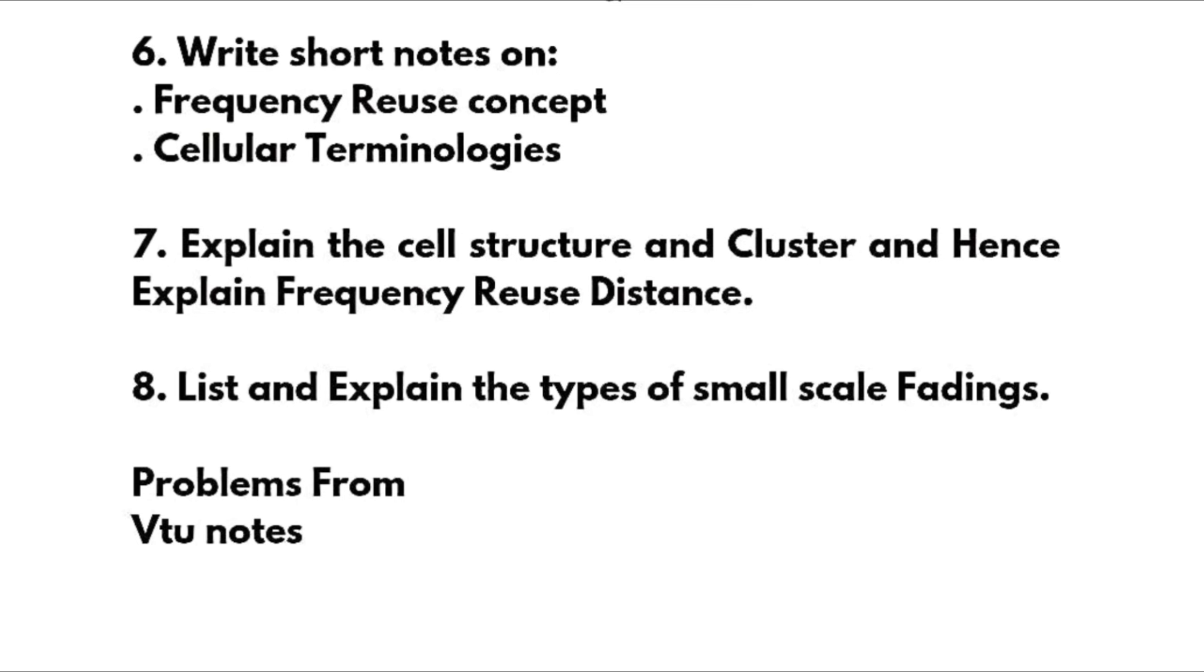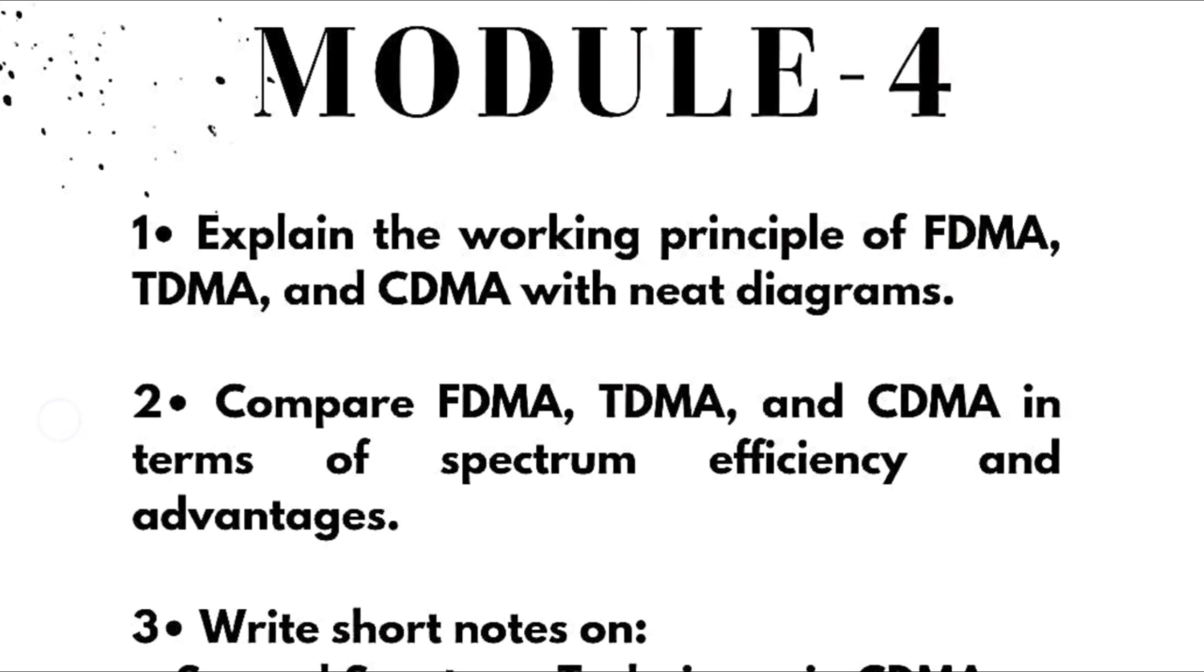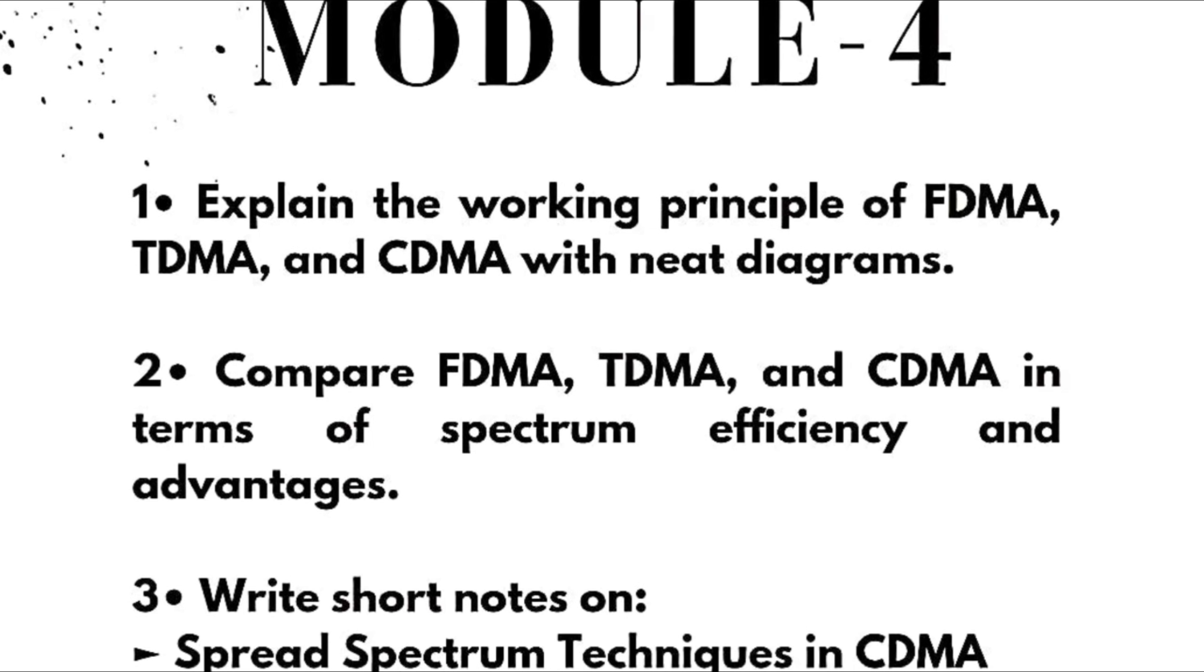List and explain the types of small scale fading. For problems you can refer VTU Cloud notes that are enough to cover the numerical portions. Next we have Module 4: Explain the working principle of FDMA, TDMA, and CDMA with neat diagrams.